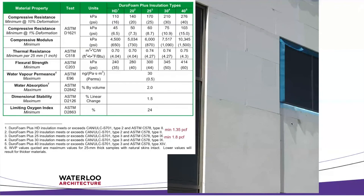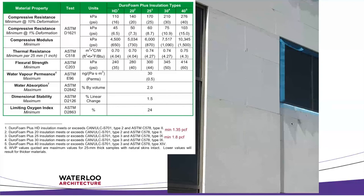EPS is available in a range of densities. At the lowest density products are very resource-efficient but less strong with lower R-value per inch. A product data sheet shows higher-density EPS products at 16, 20, 25, 30, and 40 PSI compressive strength, with R-values up to 4.3 per inch.